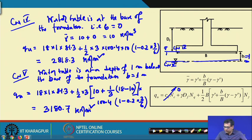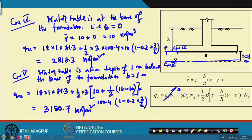In summary, if the groundwater table is at the ground surface, that gives the worst condition and the lowest bearing capacity. I am now finishing the bearing capacity part and will start the next part: the settlement criteria of the foundation design.